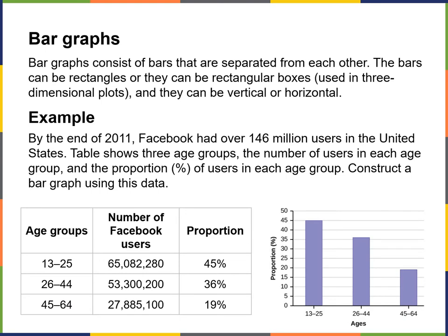Bar graphs consist of bars that are separated from each other — that's why they call it a bar graph because it looks like rows of bars. The bars can be rectangles or rectangular boxes. You can use basic bars or make them fancy; they can even be three-dimensional and can either be horizontal or vertical. Vertical seems to be more common.